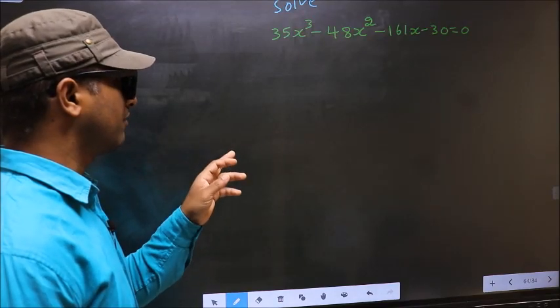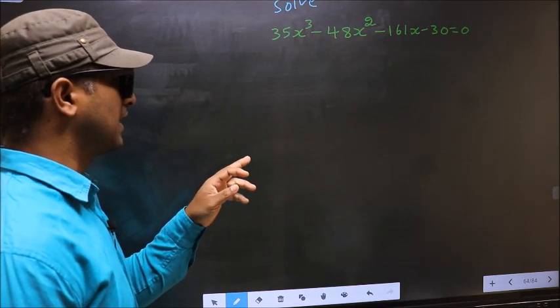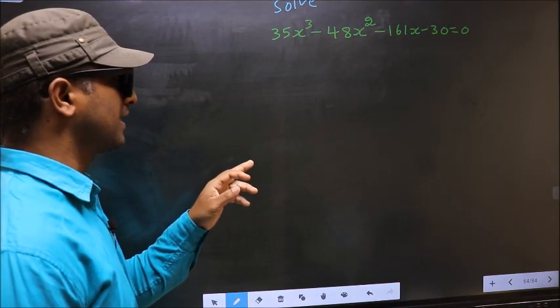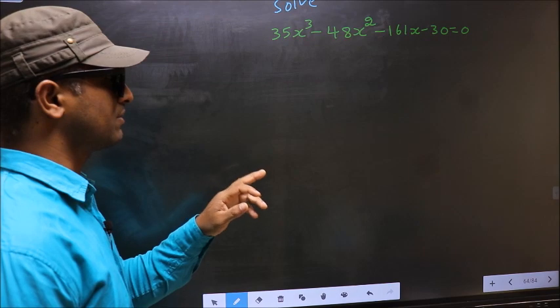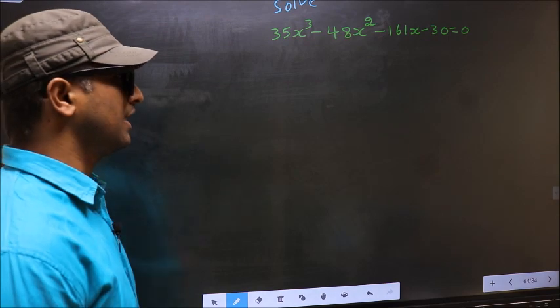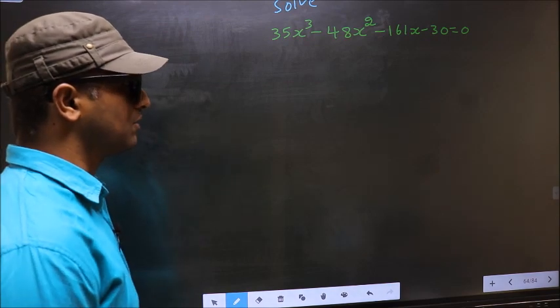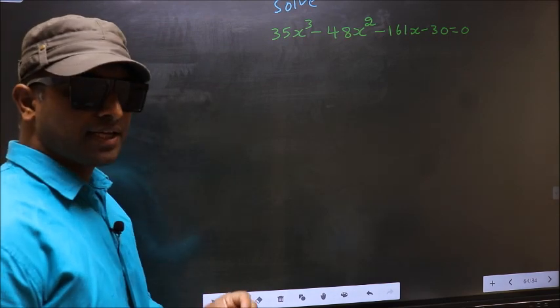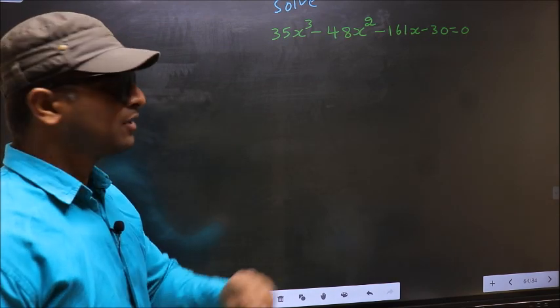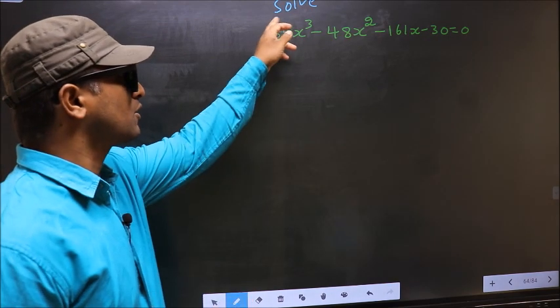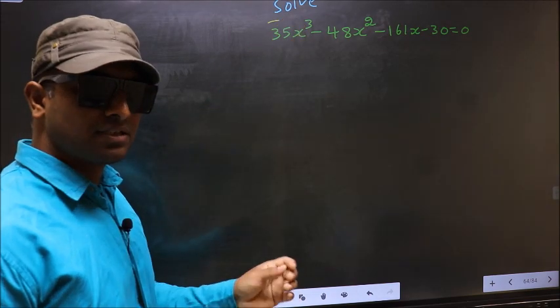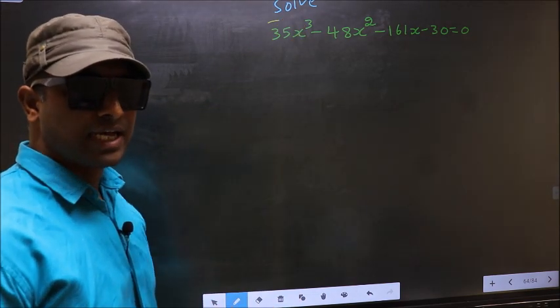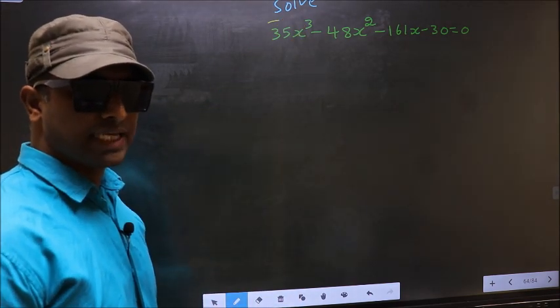Solve 35x³ minus 48x² minus 161x minus 30 equal to 0. They told us to solve, which means we should get the values of x.